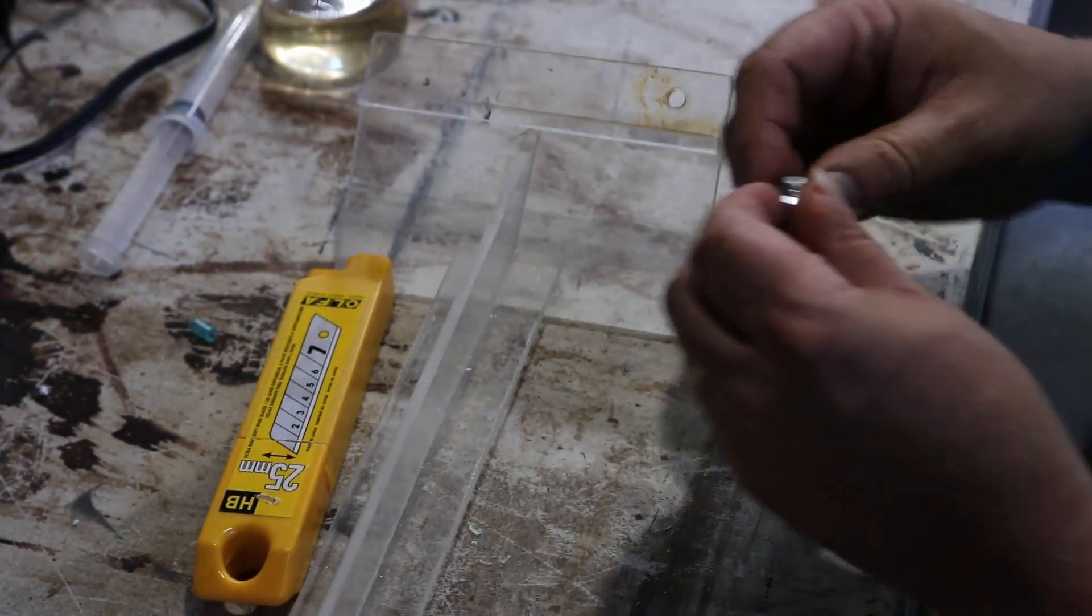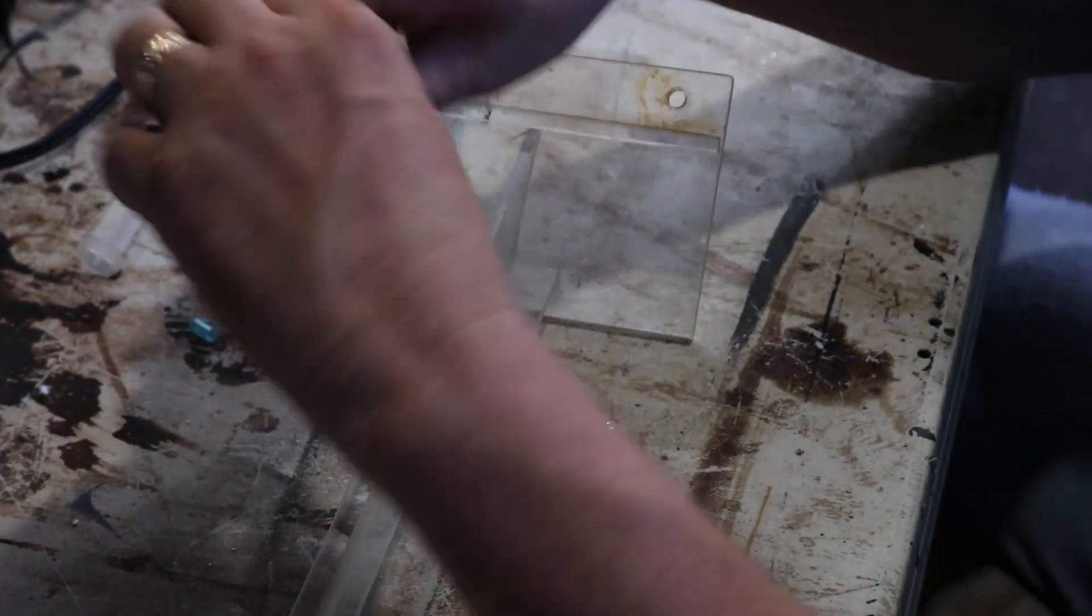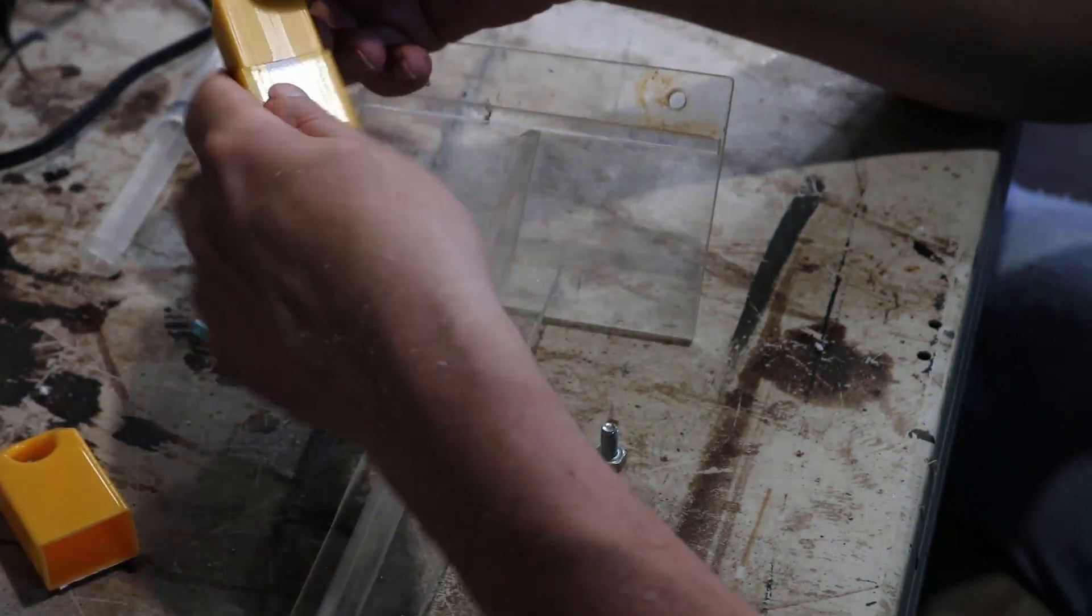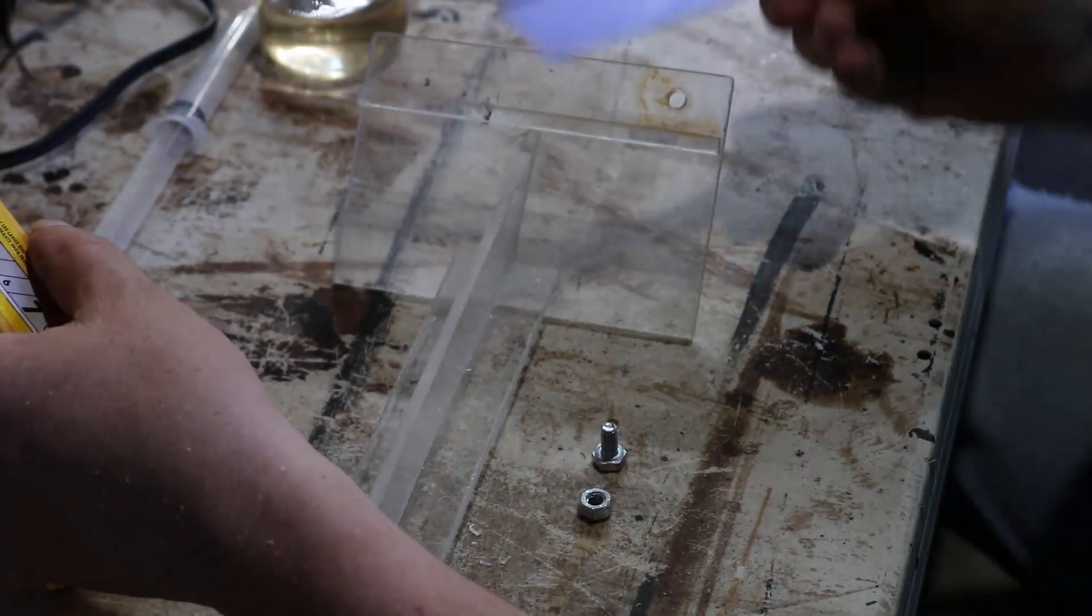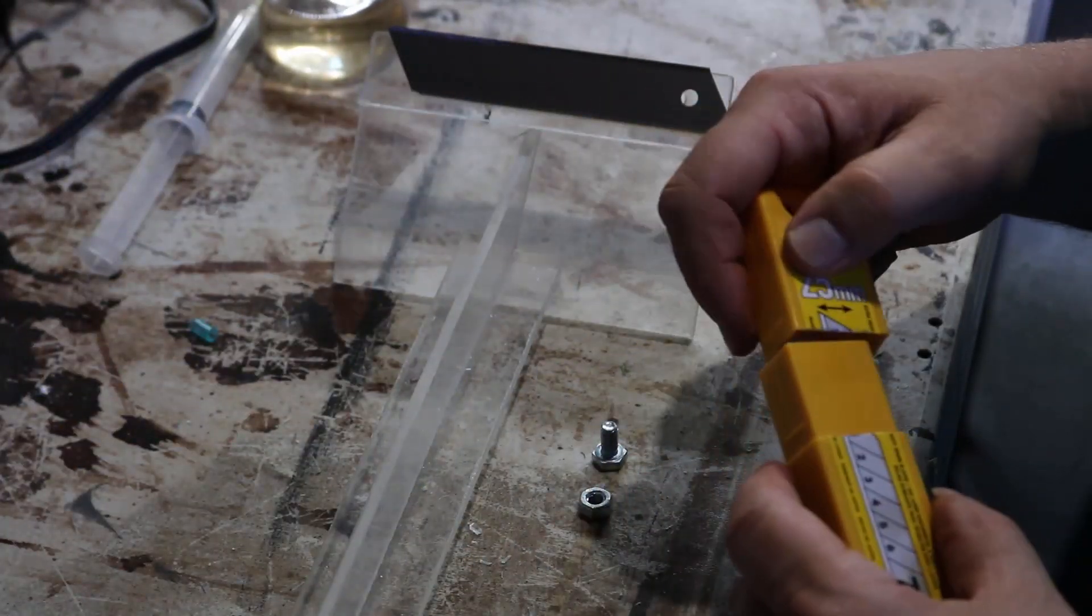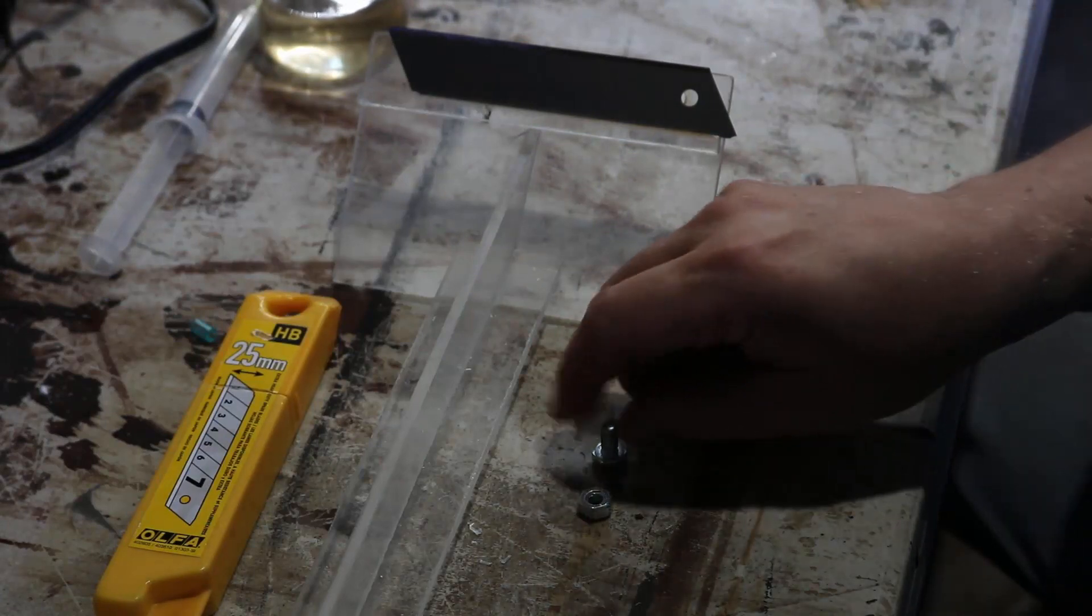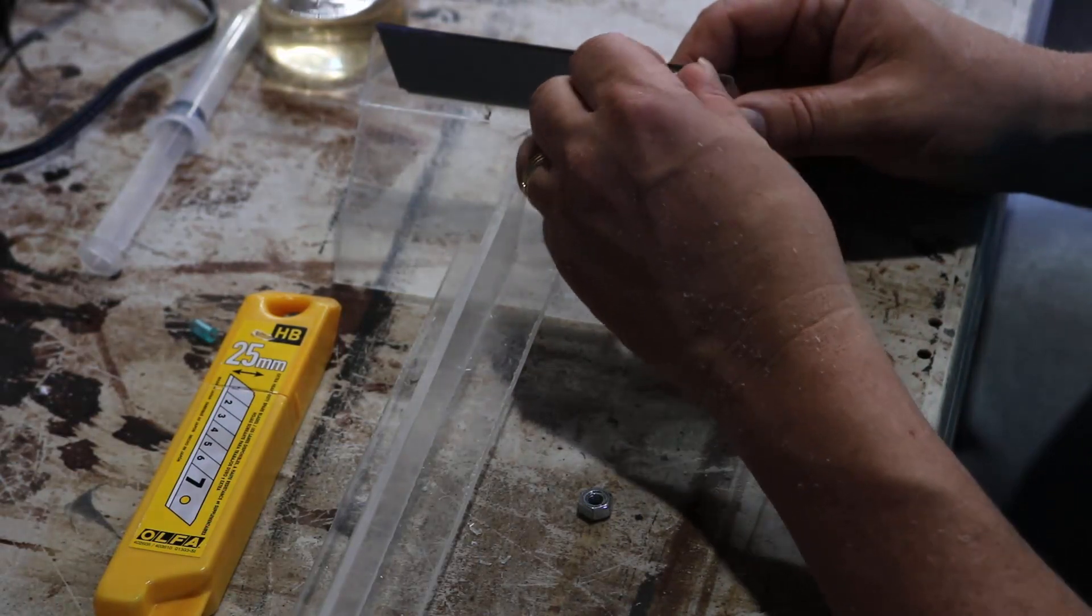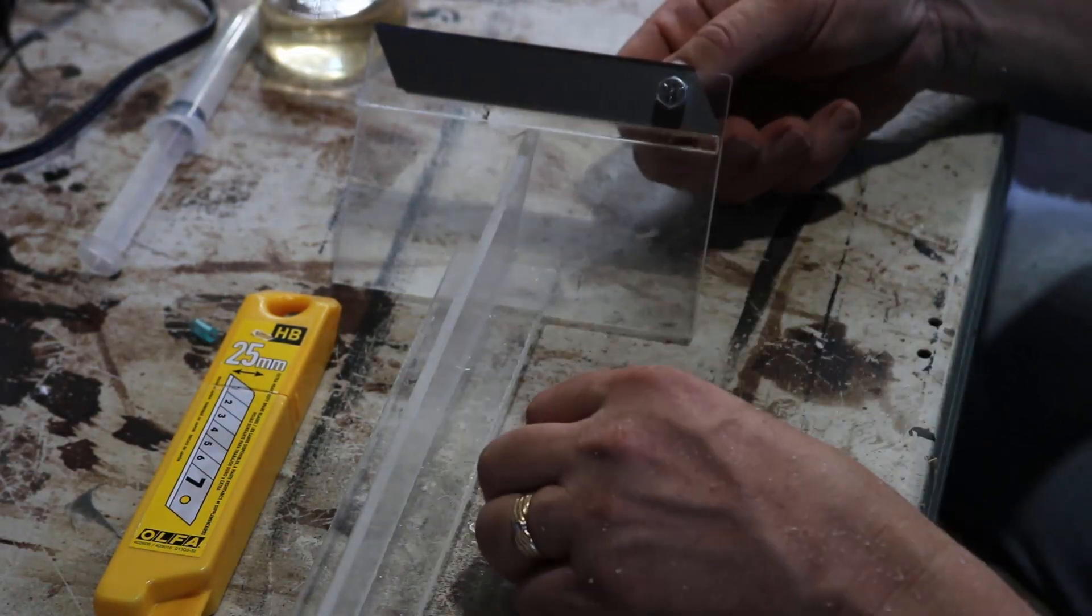I use these Olfa blades, especially the largest one you can get, because they have a rigidity to them. Because of the size of my hands it just fits nicely. I don't always use this algae scraper—if I have a small tank I'll just hold the blade freehand and do the scraping. It's nice and rigid and just easy to work with.